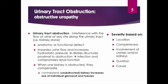Anatomic changes in the urinary system caused by obstruction are called obstructive uropathy. The severity of obstructive uropathy is determined by five things: the location of the obstructive lesion, the involvement of one or both upper urinary tracts (the ureters and renal pelvis), the completeness of the obstruction, the duration of the obstruction, and the nature or cause of the obstruction.